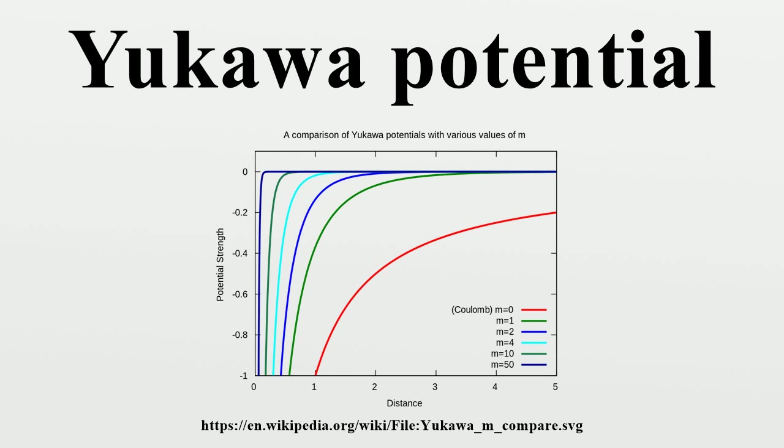Since the field mediator is massive, the corresponding force has a certain range, which is inversely proportional to the mass. If the mass is zero, then the Yukawa potential equals a Coulomb potential, and the range is said to be infinite.